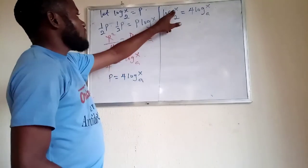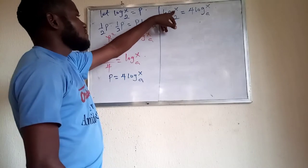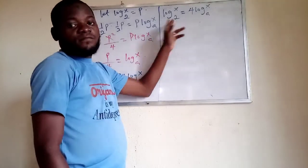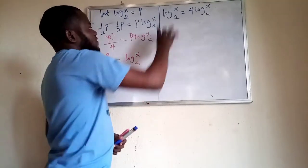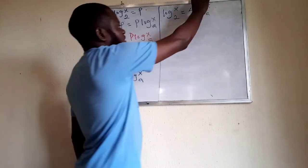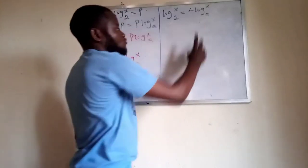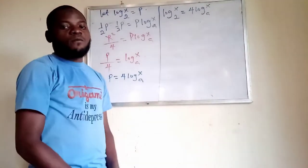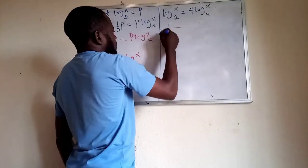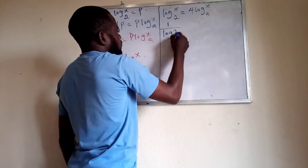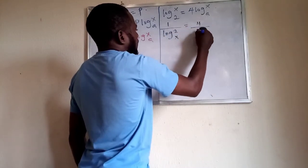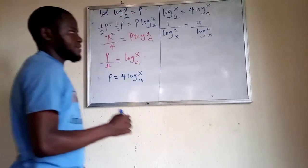We have x as a number on both sides, but the bases are different. Why not take the reciprocal of both sides so that x becomes the base, giving us a common base? So this becomes 1 over log of 2 in base x equals 4 over log of a in base x.